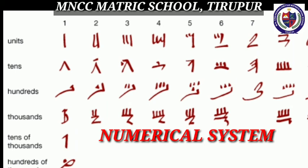Next, contributions of the Mesopotamian civilization: the potter's wheel, the calendar system of 360 days, the cuneiform system of writing, and Hammurabi's law code.